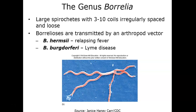Borrelia, the next member of this family, is responsible for Lyme disease. As Connecticut residents, we've often heard about Lyme disease quite a bit. These are large spirochetes that are irregularly spaced with a loose-coiled appearance. There are two big forms: Borrelia hermsii, which causes relapsing fever, and Borrelia burgdorferi, which causes Lyme disease. Both are transmitted through an arthropod vector — the tick.